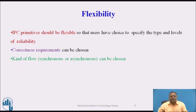Flexibility: the IPC primitive should be flexible so that the user has a choice to specify the type and level of reliability. In flexibility, many things are in the user's hands, such as type and level of reliability. Correctness requirements can be chosen, and the kind of synchronous or asynchronous communication can also be chosen.